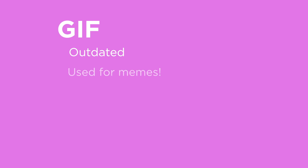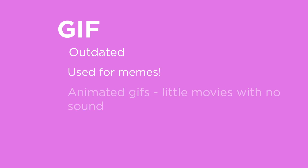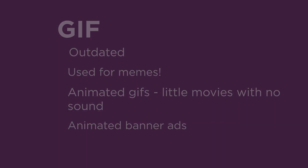The last raster format is GIF (or GIF, depending on who you ask). This file format is getting pretty outdated, but it's still used for memes — the little animated GIFs that loop and never have sound. They're also used for animated banner ads on the web, like the small Google ads off to the side that rotate or animate — those are probably animated GIFs.